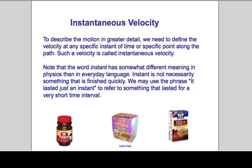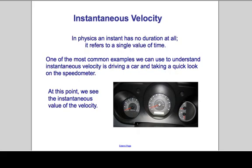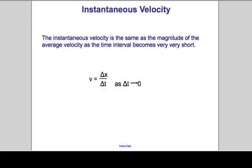For example, instant coffee, a cup of noodles which you just add hot water to, or instant oatmeal — they don't take zero time. They take some time, but they happen quickly. In physics, an instant has no duration at all. It refers to a single value of time. One of the most common examples we can use to understand instantaneous velocity is a quick look at the speedometer. The number that the speedometer points to would be your instantaneous velocity. The instantaneous velocity is defined as the ratio of the displacement per unit time as the change in time goes to zero — called an infinitesimally small time interval.